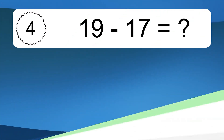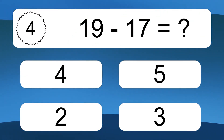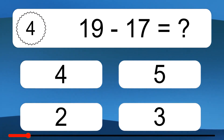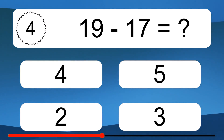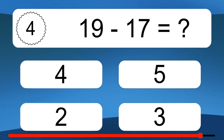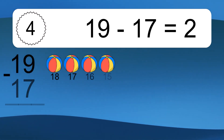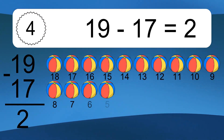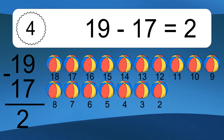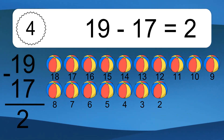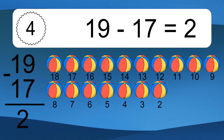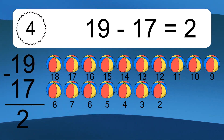19 minus 17 equals what? 19 minus 17 equals 2. Let's count it: 18, 17, 16, 15, 14, 13, 12, 11, 10, 9, 8, 7, 6, 5, 4, 3, 2.